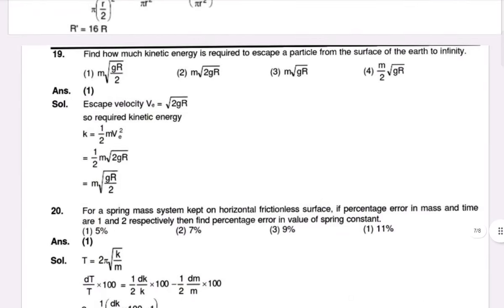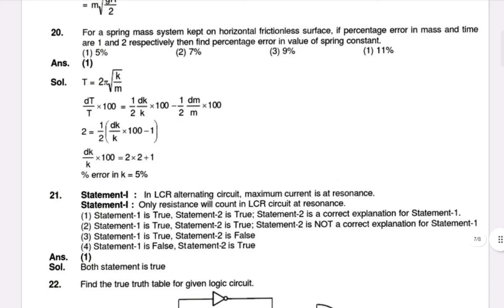How much kinetic energy is required to escape a particle from the surface of Earth to infinity? The next question is: for a spring-mass system kept on a horizontal frictionless surface, if the percentage error in mass and time are 1% and 2% respectively, then find the percentage error in the value of the spring constant.